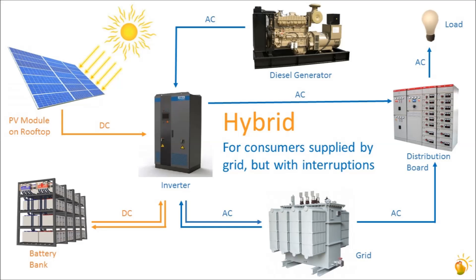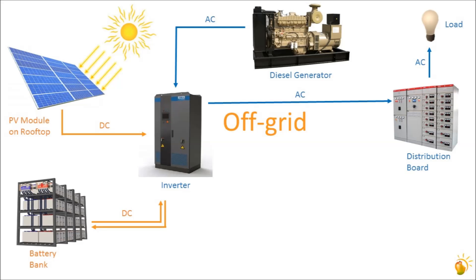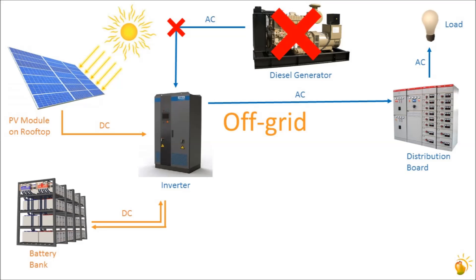Now that we have seen the different kinds of solar plants, let us consider an interesting question. What would happen if a grid-type plant did not receive grid power? The answer is simple: in the absence of grid power, the grid-type solar plant will not generate solar power even if the sun is shining brightly. What would happen if an off-grid plant, which is not connected to the grid at all, did not receive both battery and diesel power? It will not generate electricity. If however the plant receives either battery power or diesel power, the plant can generate electricity.